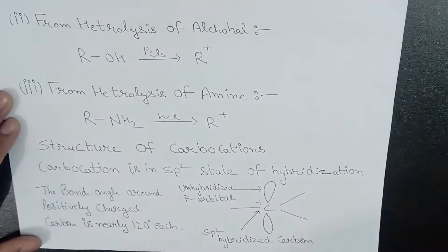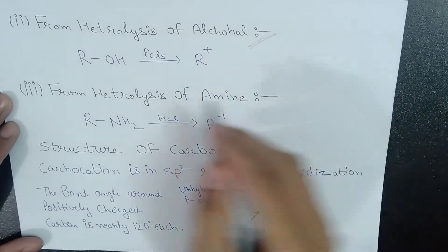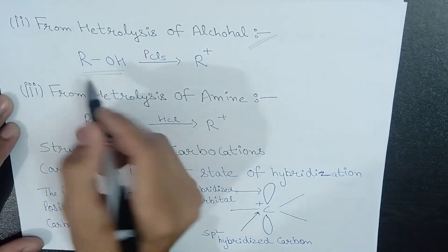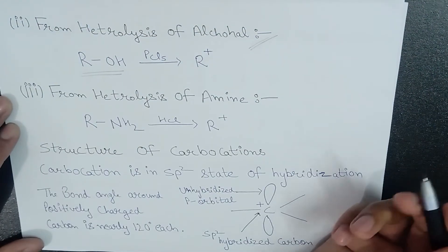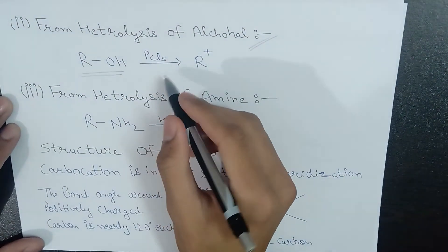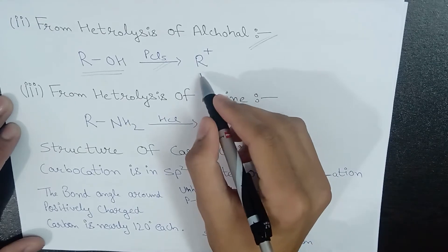Now we'll head to the next example from heterolysis of alcohol. We'll be considering any alcohol where R depicts the carbon chain. It can be C3H6 or whatever you can take. In the presence of PCl5, this will give the carbocation.